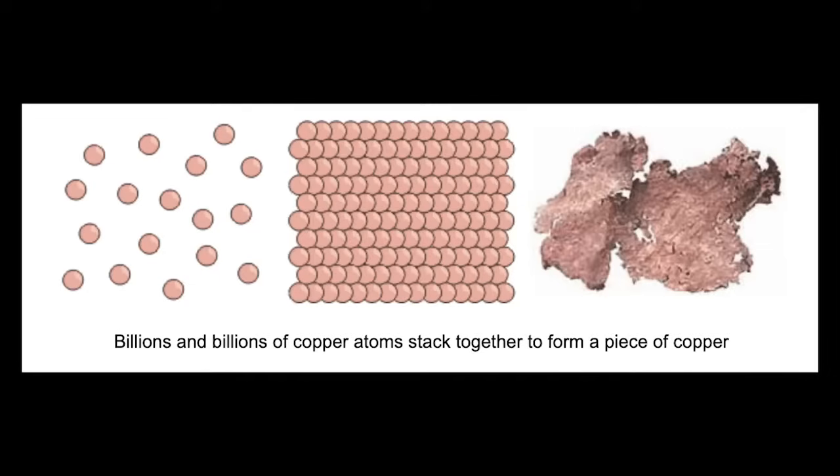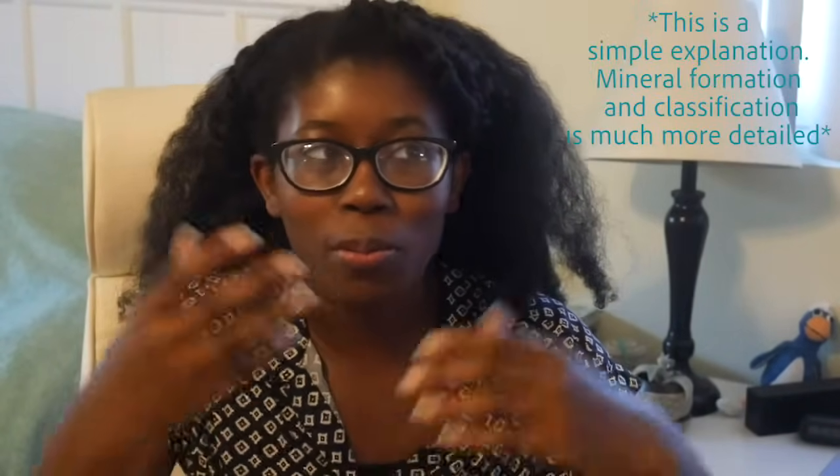When elements like oxygen, sodium, chlorine, and hydrogen are arranged in orderly structures, they form minerals. And one or more minerals combined together forms rocks.